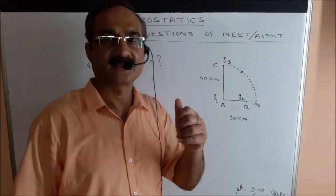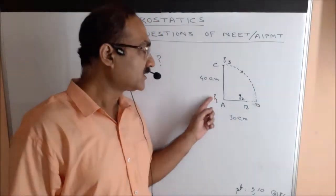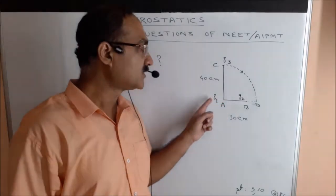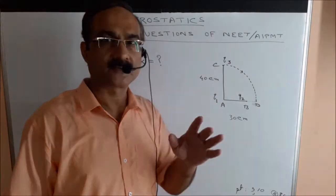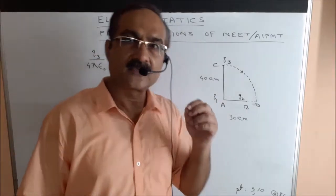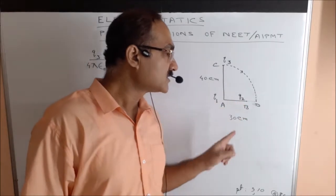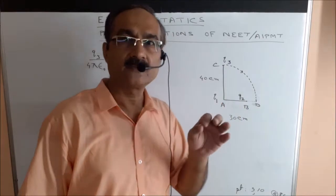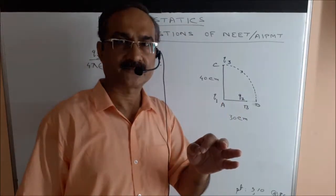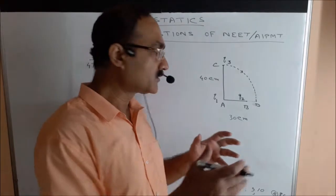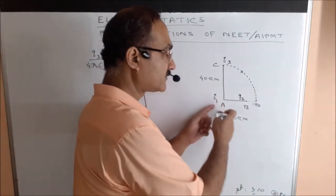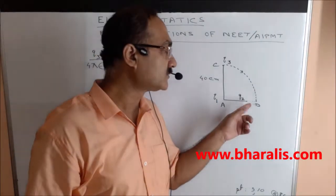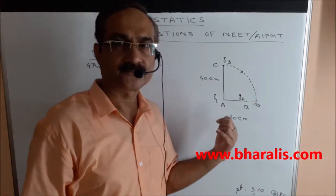Let's say Q1 is the first charge we brought into this area, so the potential energy of Q1 is 0. Next, Q2 is the second charge we bring to this point, so Q2 will have some potential energy. The potential energy of the whole system will be potential energy of Q1 plus potential energy of Q2, which equals the potential energy of Q2 because Q1's contribution is 0.